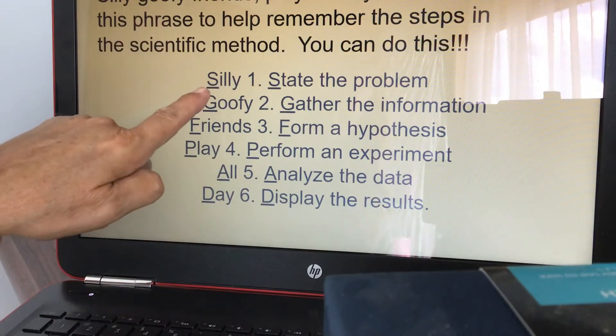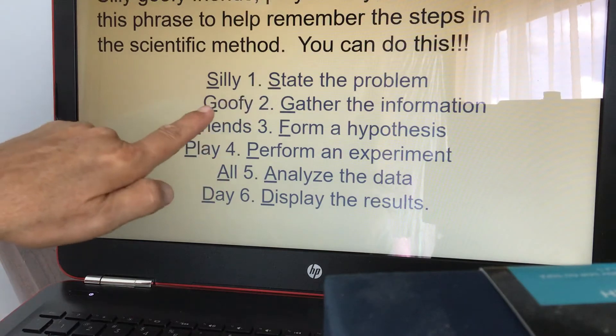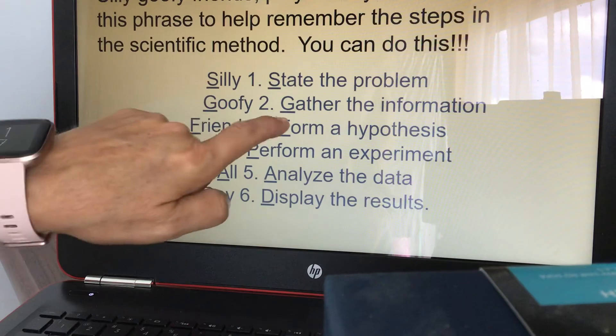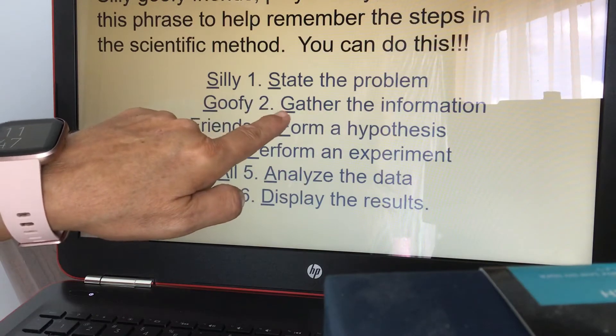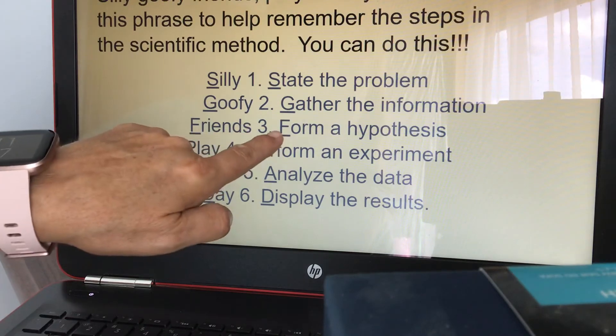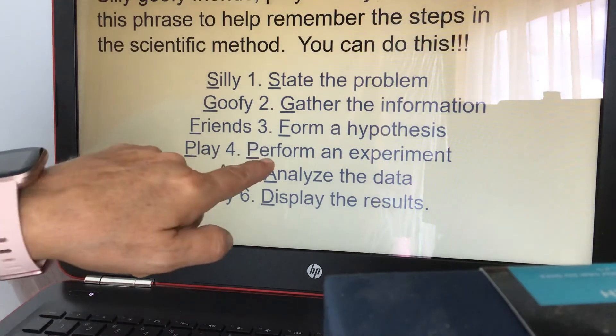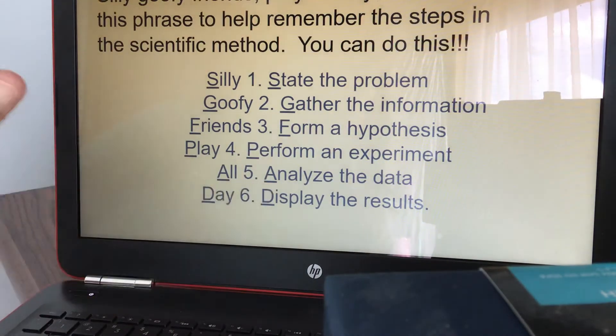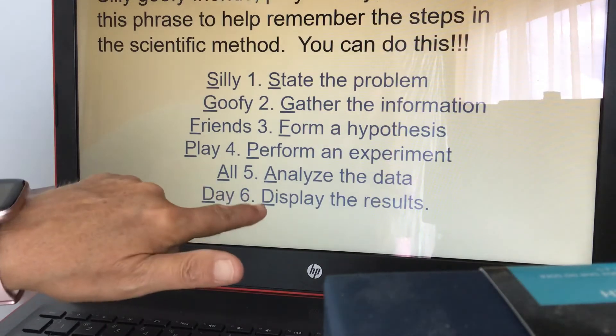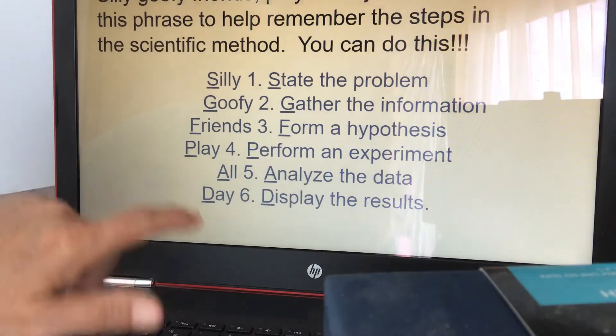So silly begins with S and state the problem, state begins with S. Goofy begins with G and gather the information, gather begins with G. F for friends also starts, form starts with the letter F. P for play, P for perform, A for all, A for analyze, D for day, D for display. So if you can remember silly goofy friends play all day, you could at least remember the order of the scientific method.